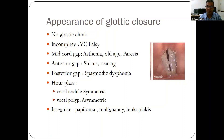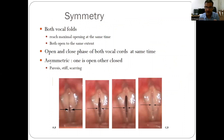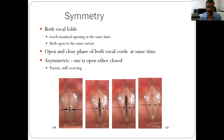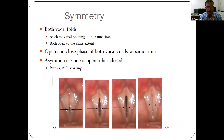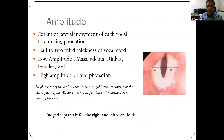Always comment on glottic closure and consider why there is incomplete closure. The third parameter is symmetry. Symmetry refers to the movement of both vocal folds together — we do not comment on right or left separately but on both cords as a unit. Both vocal cords should reach maximal opening at the same time and to the same extent. If one opens more than the other, that is asymmetry, which is seen in stiff vocal cords, scarring, weakness, or paresis.